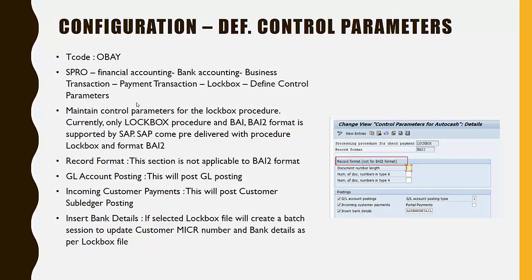SAP supports one lockbox procedure — lockbox — and two file formats: BAI and BAI2. BAI is an older version where the incoming file will not automatically clear customer open invoices. BAI2 is the later version; it has more detail, automatically posts to the bank account, and also automatically clears customer open invoices. We will go with BAI2 format, which is widely used in the US.